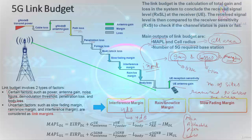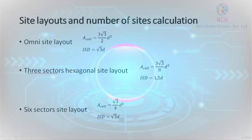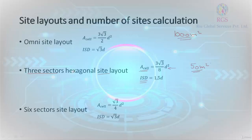Using the link budget, let's say we get a cell radius of 200 meters for 5G and we are using a three-sector site to cover the area. There is a formula for cell area and a formula for inter-site distance. Putting the cell radius value into the formula, you can get the cell area to be covered. Let's say the cell area of a three-sector site comes out to be 50 square meters, and we are asked to cover an overall area of 1000 square meters.